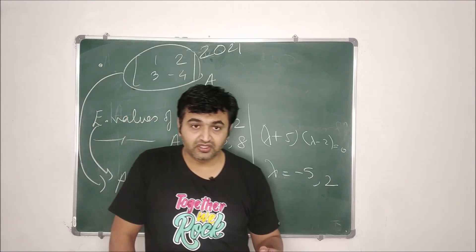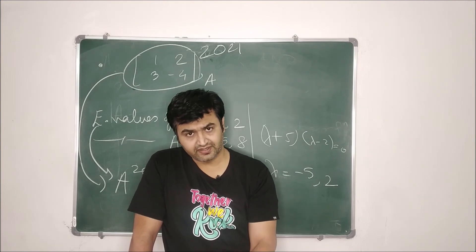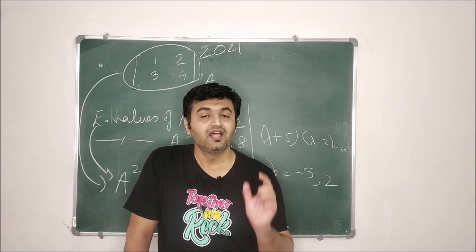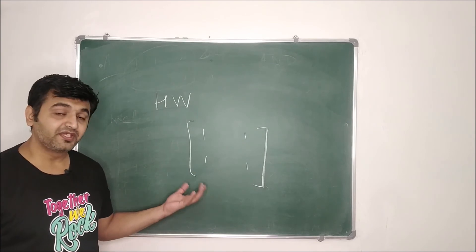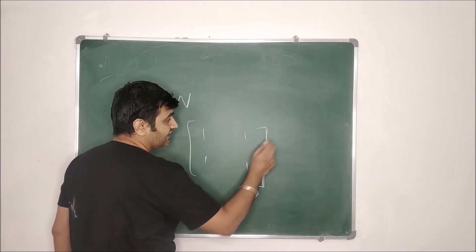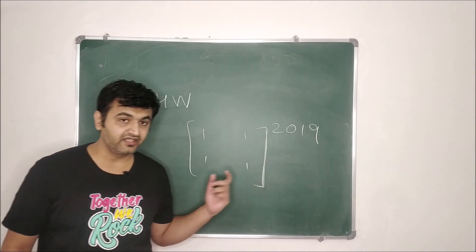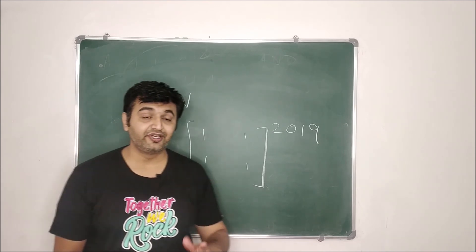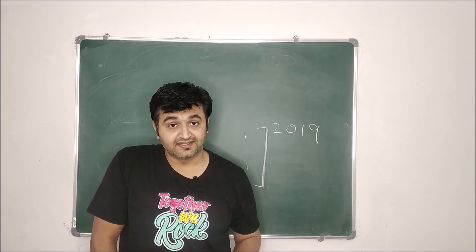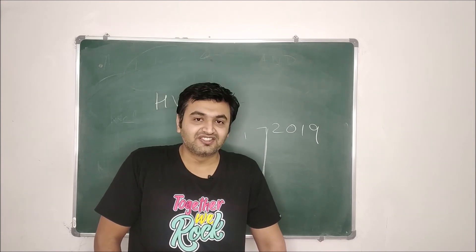So whenever you have a question about finding eigenvalues and eigenvectors for a power of a matrix: ignore the power, find the eigenvalues and eigenvectors for the original matrix — eigenvectors remain the same and eigenvalues get raised to that power. For homework: given the matrix [1,1;1,1], find the eigenvalues for this matrix raised to 2019. Comment your answer below, and if you have any doubts or other examples, ask in the comments. If you liked this lecture, please like, share, and subscribe. Thank you.